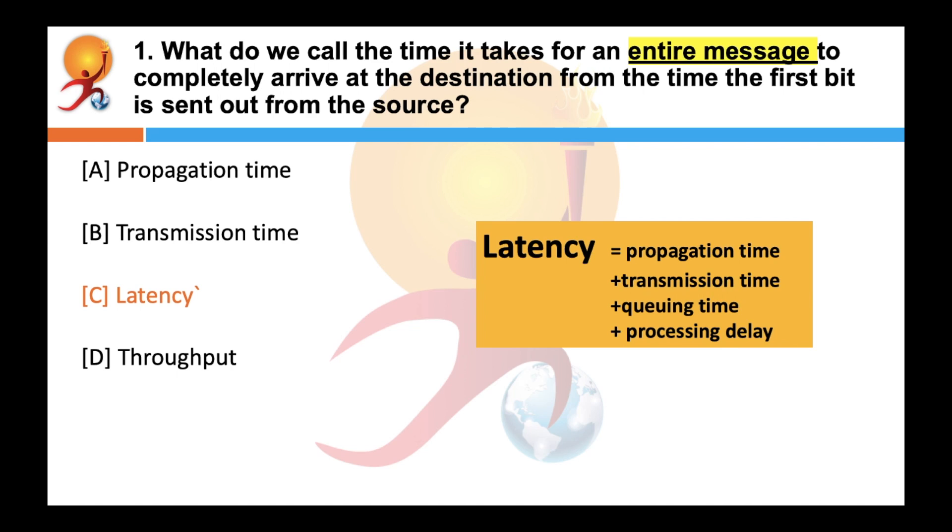If you talk about propagation delay, it is the amount of time it takes for the head of the signal to travel from sender to receiver. Transmission time is the amount of time from the beginning until the end of the message transmission. Network throughput is the rate of successful message delivery over a channel, basically a measure of how fast it happens.